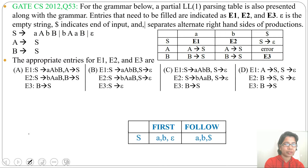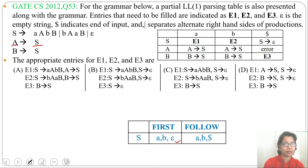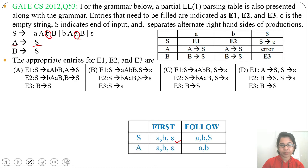Next, find FIRST of A. FIRST of A will be FIRST of S, which we already found is A, B, epsilon. Then FOLLOW of A will be B and A. So: FIRST(A) = {A, B, epsilon} and FOLLOW(A) = {A, B}.